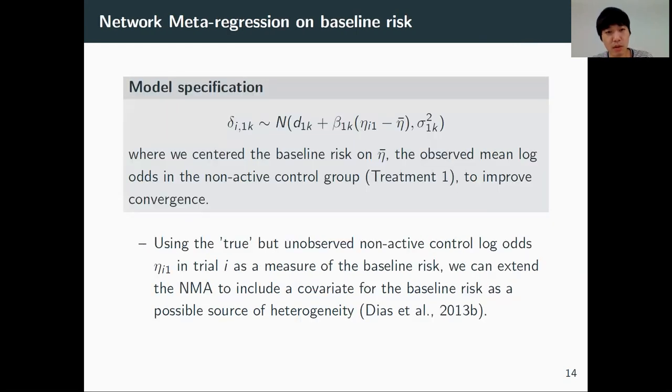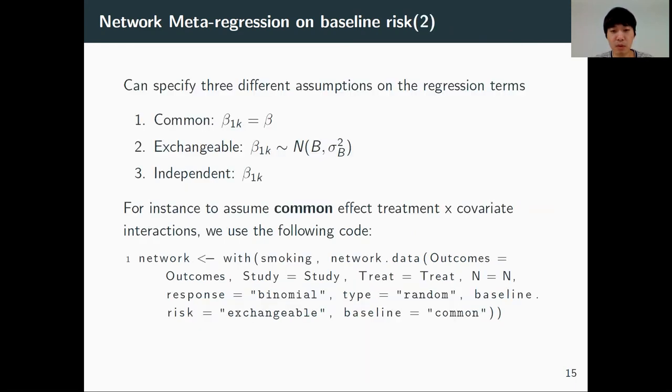So another model that we have added is we can use baseline risk as a meta-regression, similar to how we include covariate information. By adding this baseline risk as meta-regression, we can explain possible sources of heterogeneity. There are three different assumptions we can make: common, exchangeable, and independent.